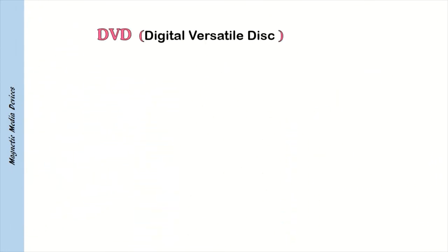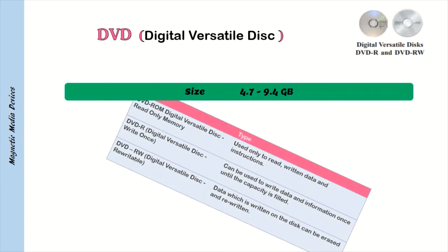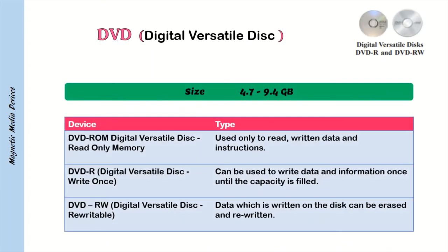DVD (Digital Versatile Disk) types: DVD-ROM — used only to read written data and instructions. DVD-R — can be used to write data and information once until the capacity is filled. DVD-RW — data written on the disk can be erased and rewritten.